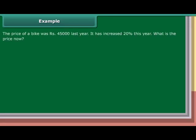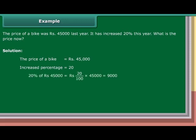Example: The price of a bike was Rs. 45,000 last year. It has increased by 20% this year. What is the price now? Solution: The price of a bike is Rs. 45,000 and the increased percentage is 20%. 20% of Rs. 45,000 is equal to Rs. 20 upon 100 into Rs. 45,000.